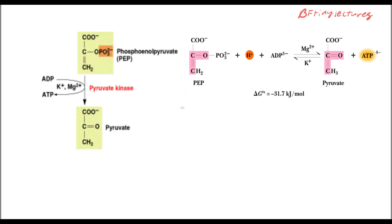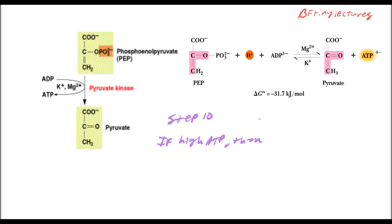For step ten, the body regulates the formation of pyruvate from PEP by sensing the amount of ATP in the body. If ATP is high, there will be low amounts of pyruvate formation.